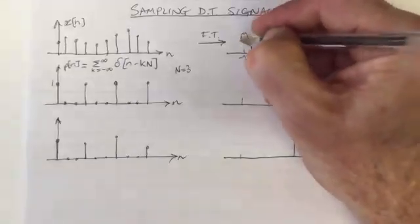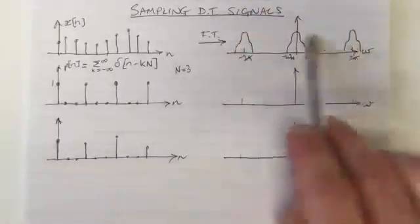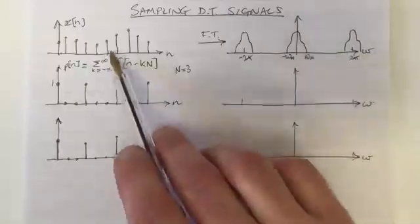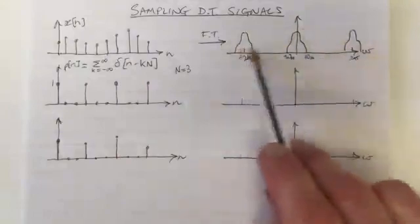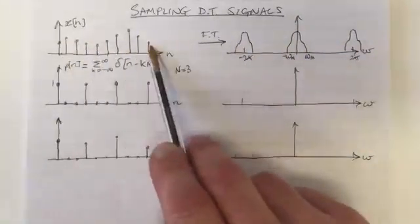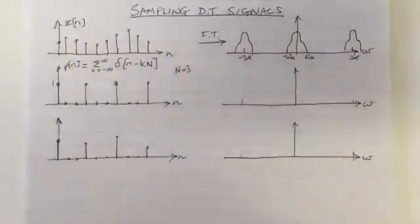and minus 2π, and so on. So this is a property that we know because the basis functions in discrete time, they repeat. So this is a typical Fourier transform of a signal that looks like this, if it's low-pass.